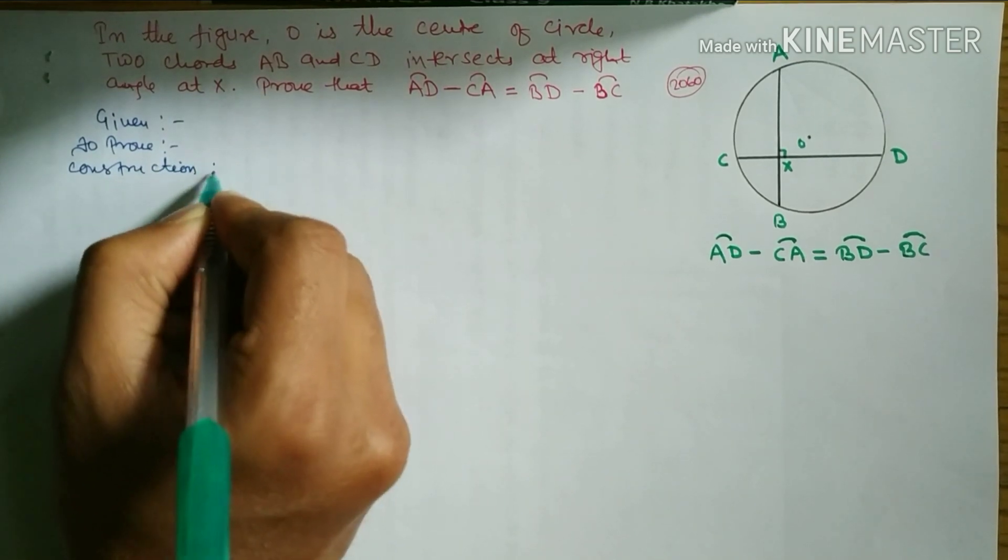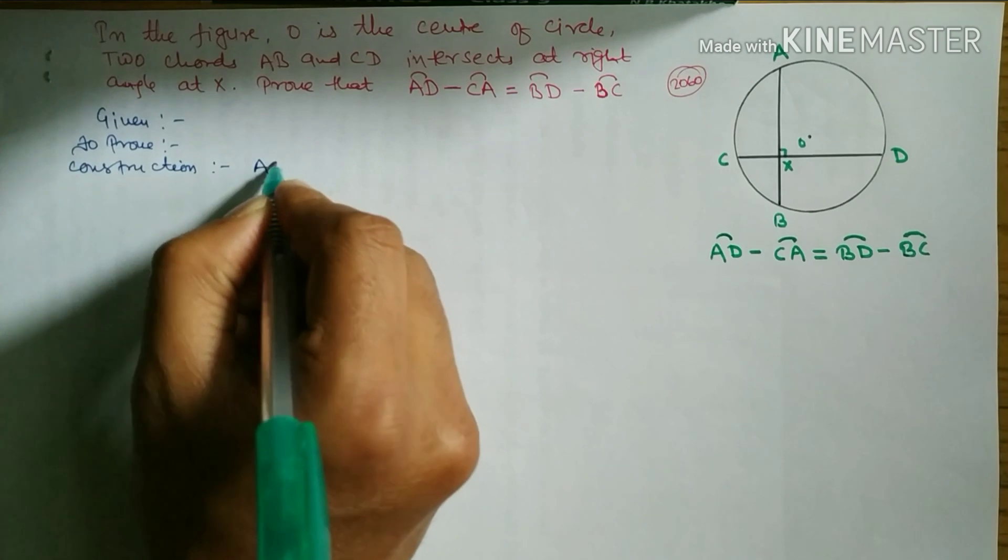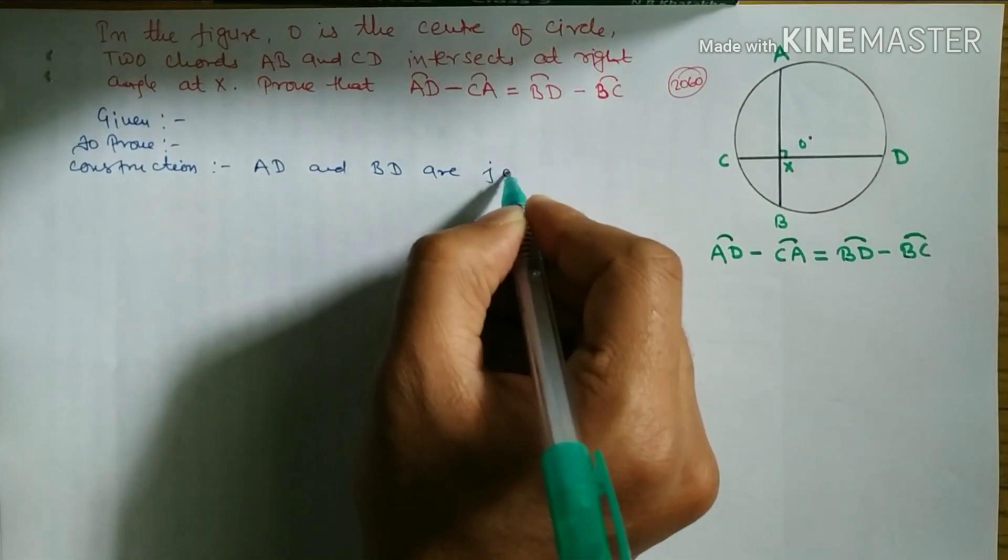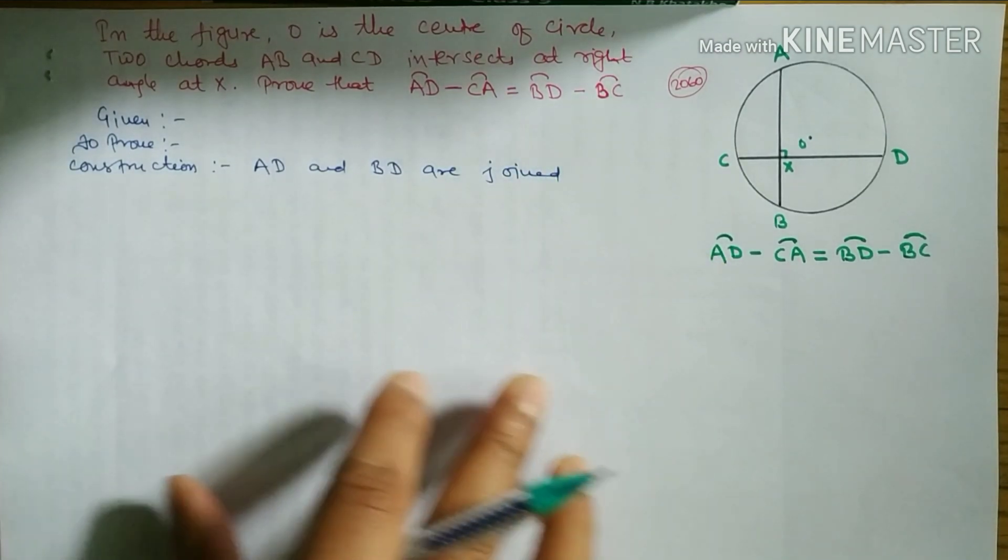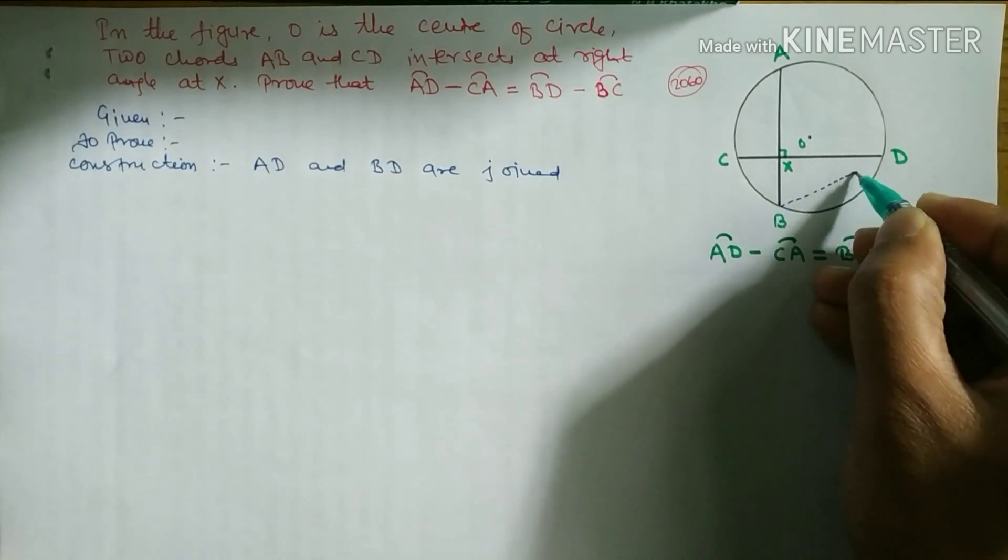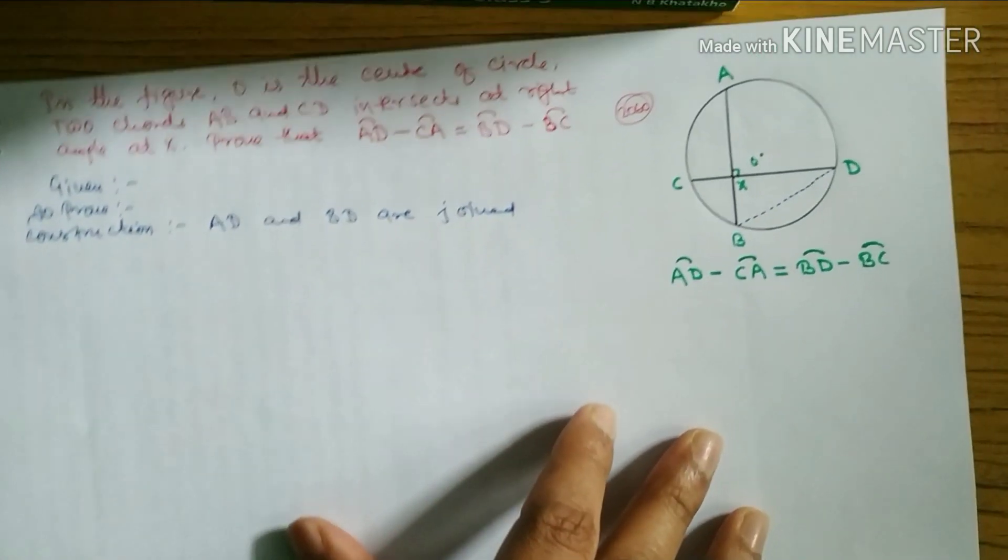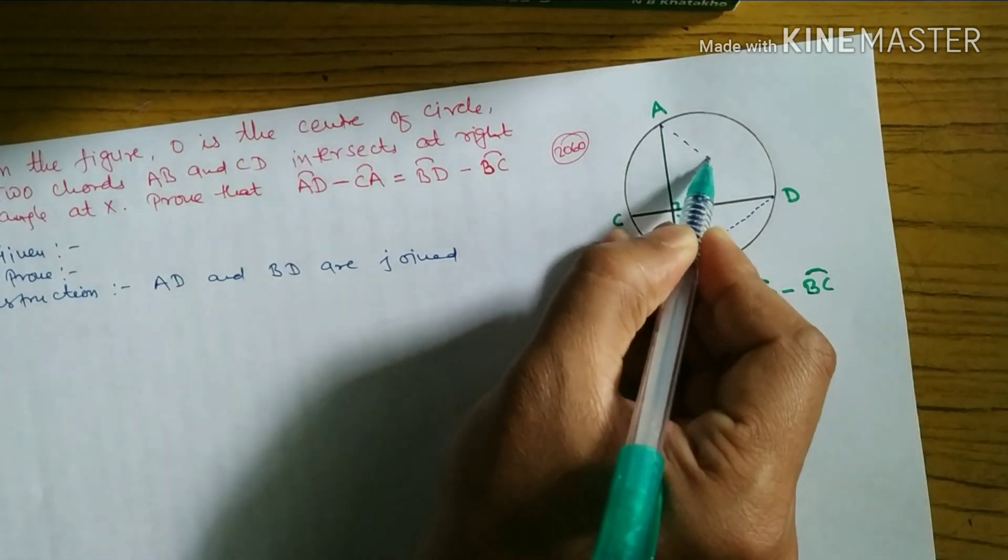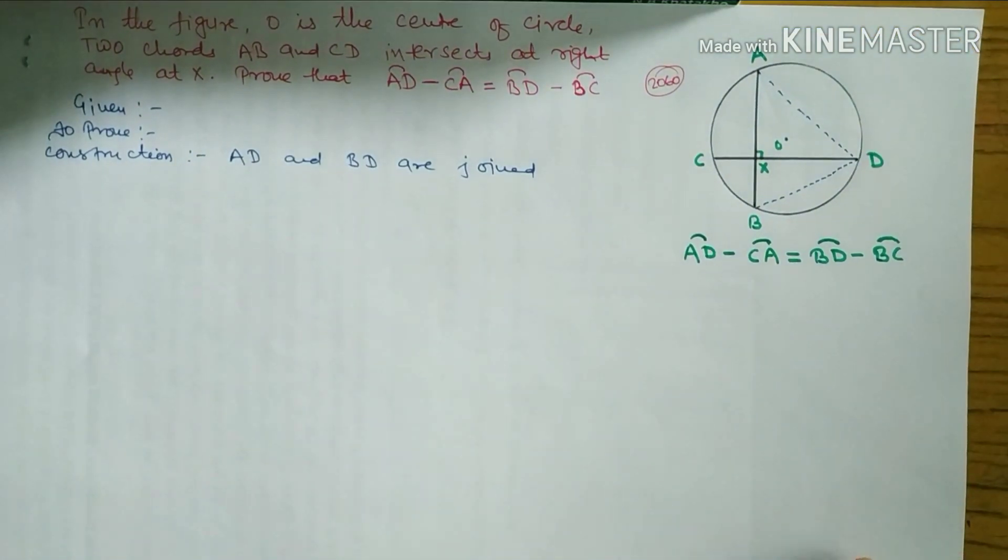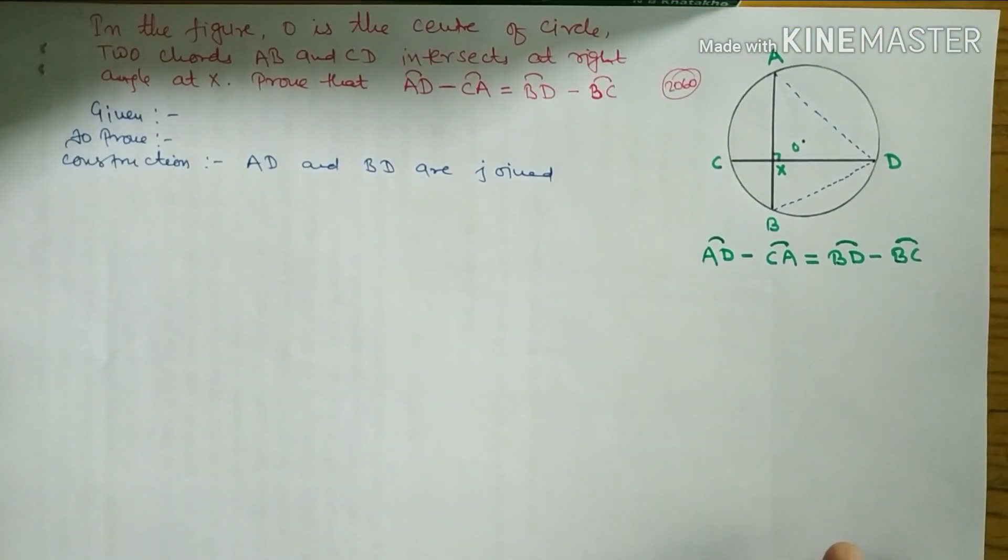In construction you have to write down: AD and BD are joined. Let's join AD and BD. In exam time you have to use scale and pencil, not pen. And diagram is necessary to draw. Always you have to give dotted lines, don't give straight lines, because you are going to construct yourself which is not in the question. You have to use pencil and scale, don't use pen.